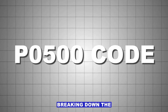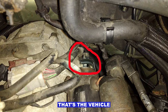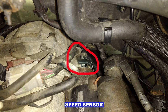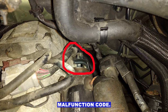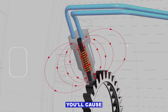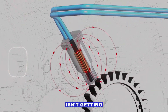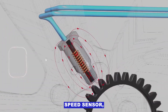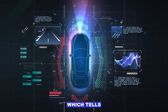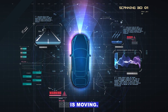Today we're breaking down the P0500 code — that's the Vehicle Speed Sensor (VSS) malfunction code. Basically, your car's onboard computer isn't getting a proper signal from the Vehicle Speed Sensor, which tells the computer how fast your vehicle is moving.